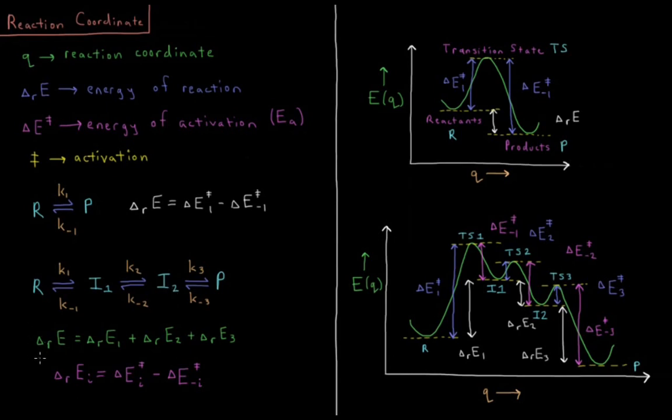The energy of the net reaction going from the reactants to the products is, as we can get from Hess's law, the energy change of reaction 1 plus the energy change of reaction 2 plus the energy change of reaction 3. And the energy change of each individual sub-reaction along the way is equal to the energy of activation of its forward direction minus the energy of activation of its reverse direction.